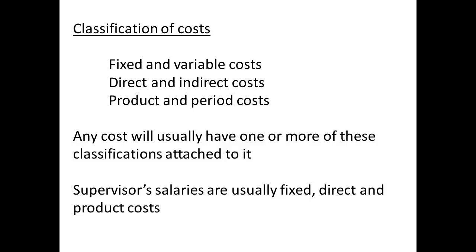Costs can be classified into groups as follows: fixed and variable costs, direct and indirect costs, and product and period costs. Any cost will have at least one of these classifications attached to it. For example, the salary of a supervisor is usually fixed, direct, and considered as a product cost.